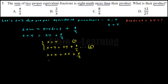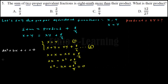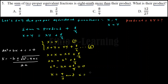Rearranging, we get x squared minus 2x plus 8 over 9 equals 0. This is now a quadratic equation. For quadratic equations in the form ax squared plus bx plus c equals 0, x equals negative b plus or minus the square root of b squared minus 4ac, all over 2a. In our quadratic equation, a equals 1, b equals negative 2, c equals 8/9. Substituting these coefficients, we get x equals 4 over 3 and x equals 2 over 3.